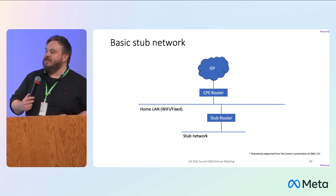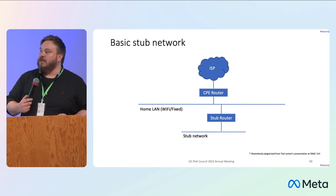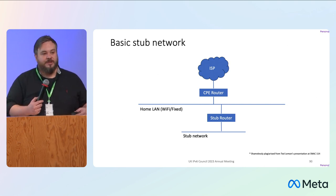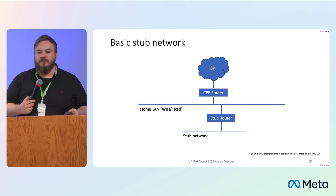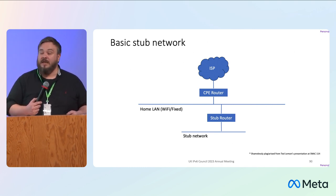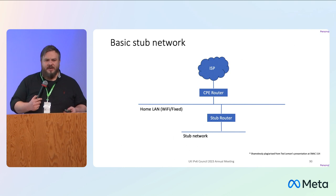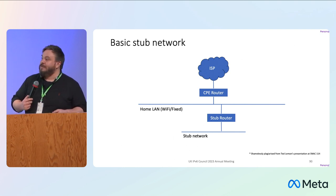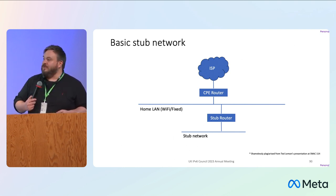A stub network is typically something that is behind another router — a sort of cascading router, another type of device that's routing packets in and out somewhere else in the home. We used to call these things gateways, but for the purpose of this now, we call them stub networks and stub routers.